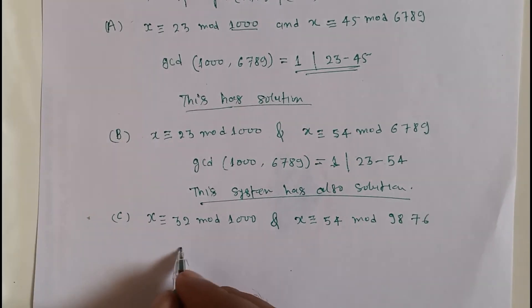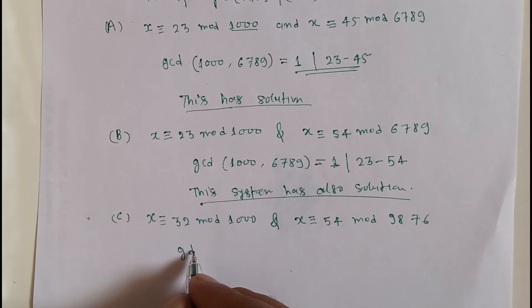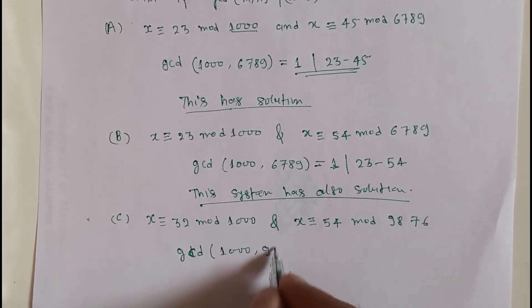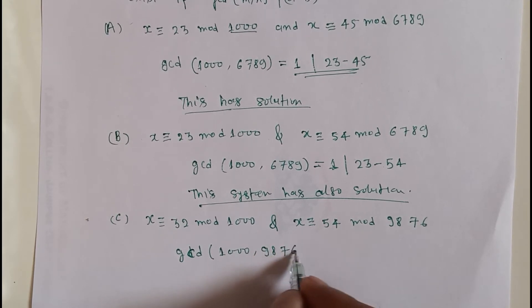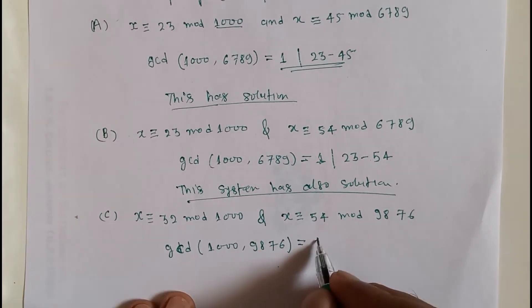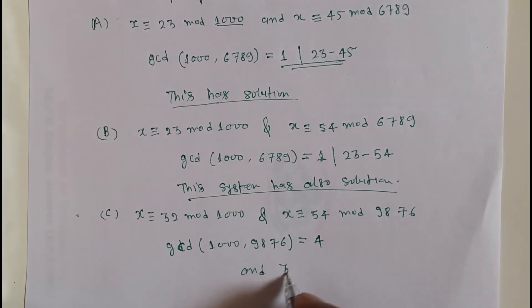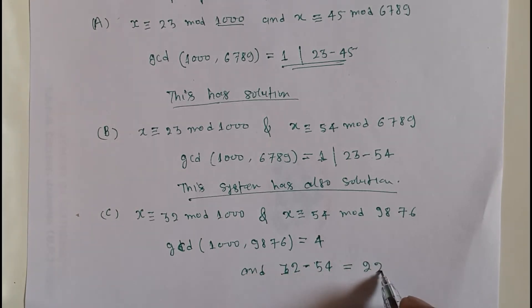Here, the greatest common divisor of 1000 and 9876 is equal to 4, and 32 minus 54 is equal to negative 22.